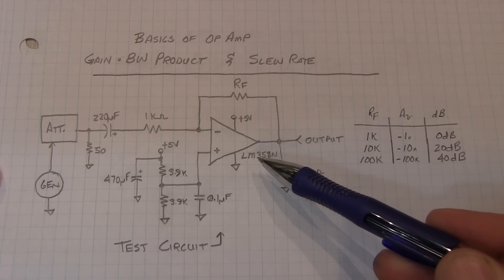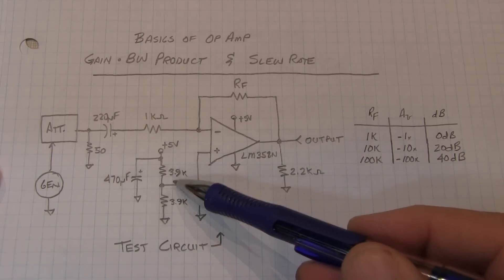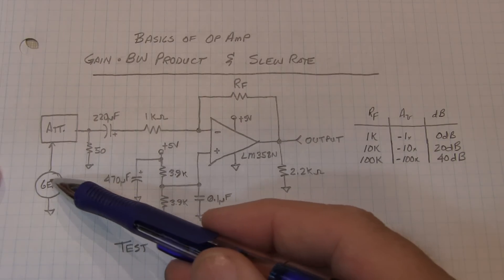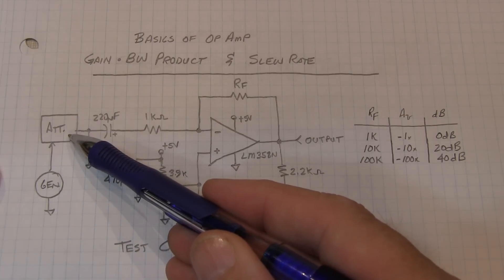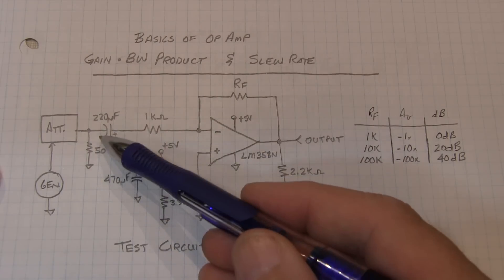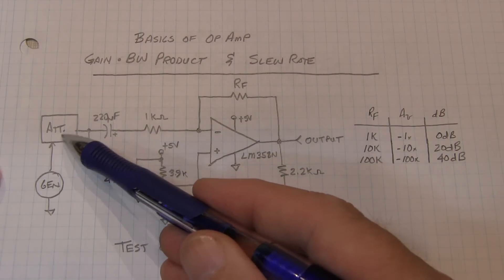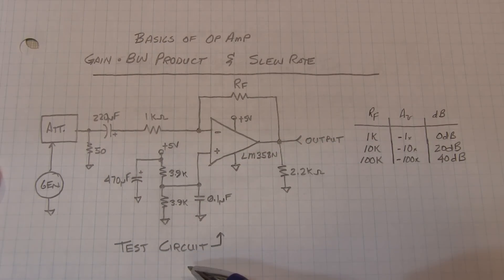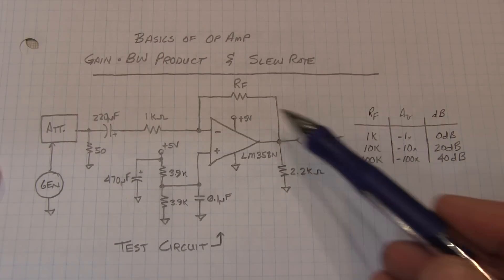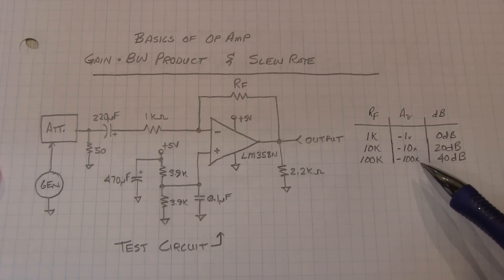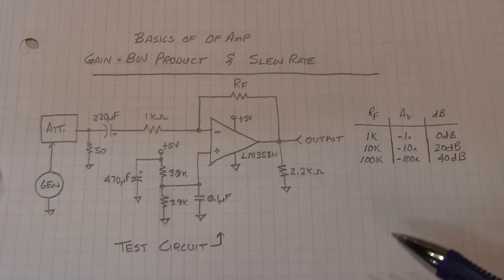We've got an LM358 op amp configured as an inverting gain amplifier. These two resistors are a voltage divider to set up the virtual ground point. We're taking a signal out of a signal generator through an adjustable attenuator, AC coupling that into the amplifier. I've got three different feedback resistors that we can put in here to configure an inverting gain of 1, negative 10, or negative 100, or 0 dB, 20 dB, and 40 dB.